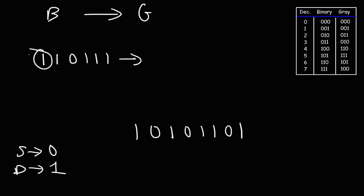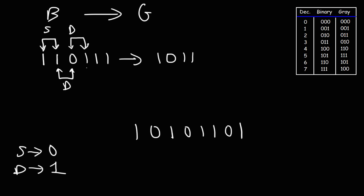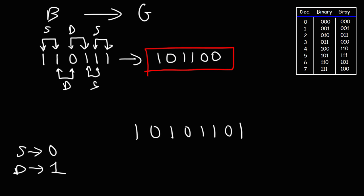For 110111, first rewrite the MSB, which is 1. Then: 1 and 1 are the same, so 0. 1 and 0 are different, so 1. 0 and 1 are different, so 1. 1 and 1 are the same, so 0. And those two are the same, so 0. The answer for the first practice problem is 101100.